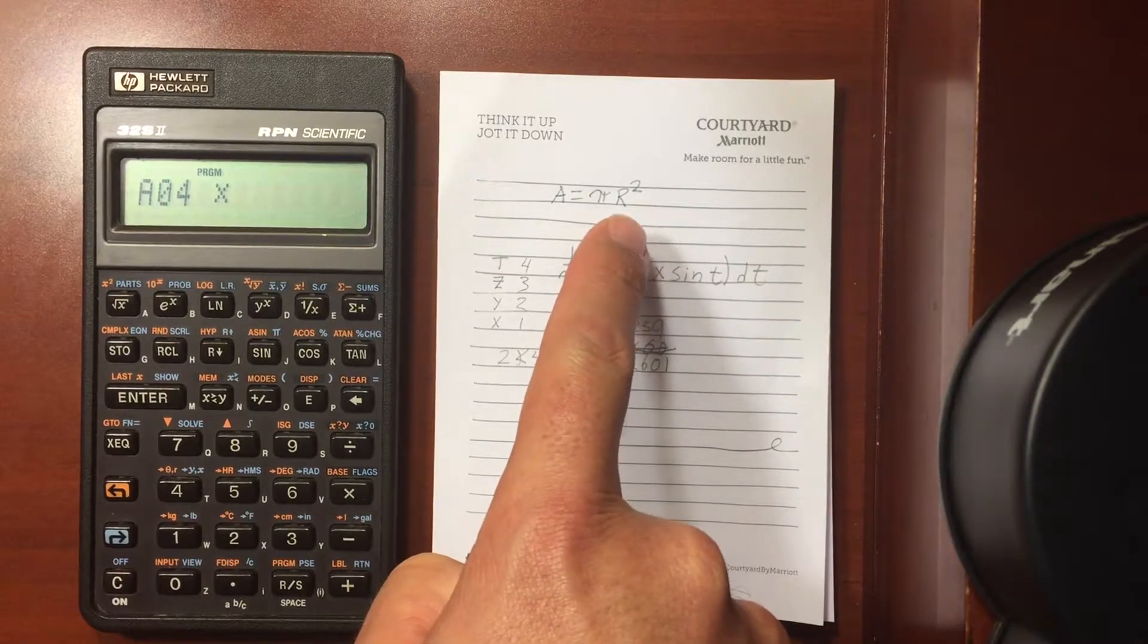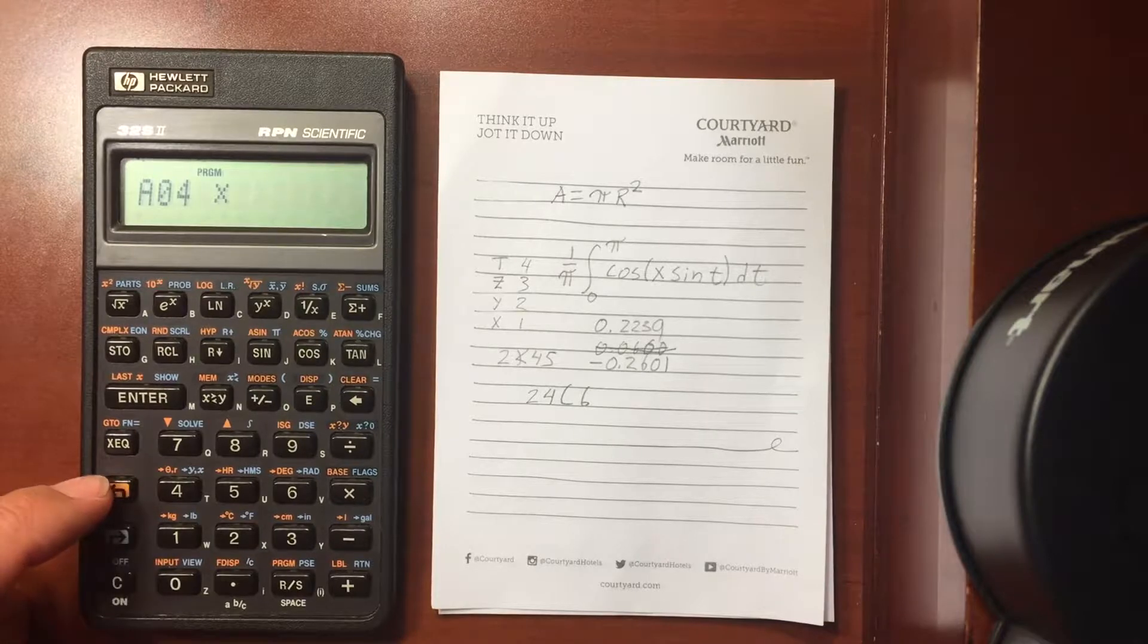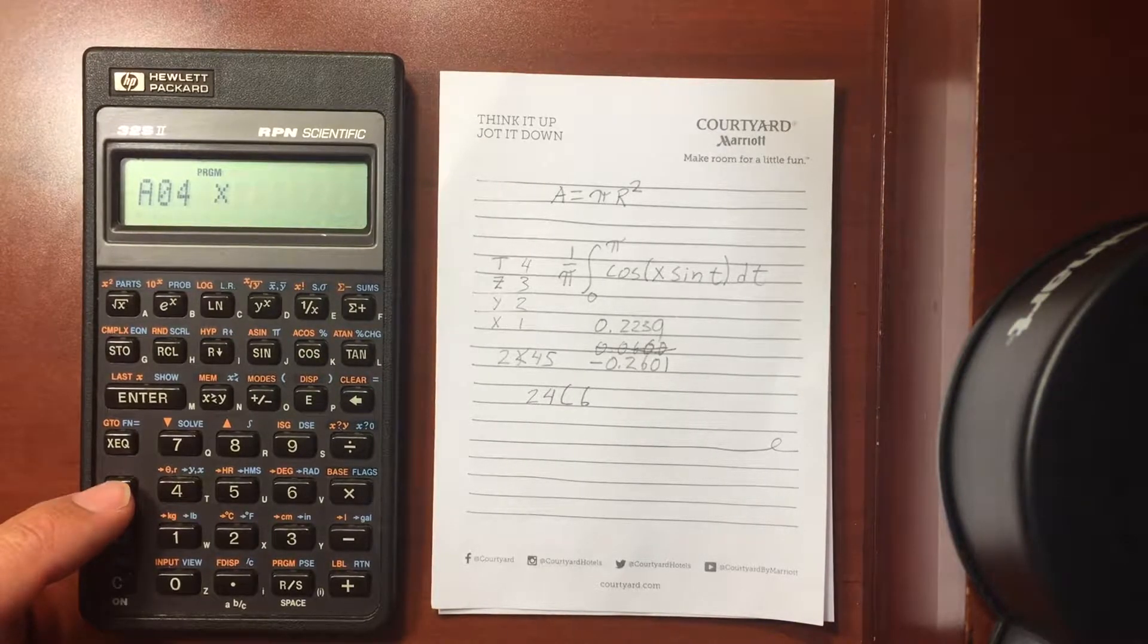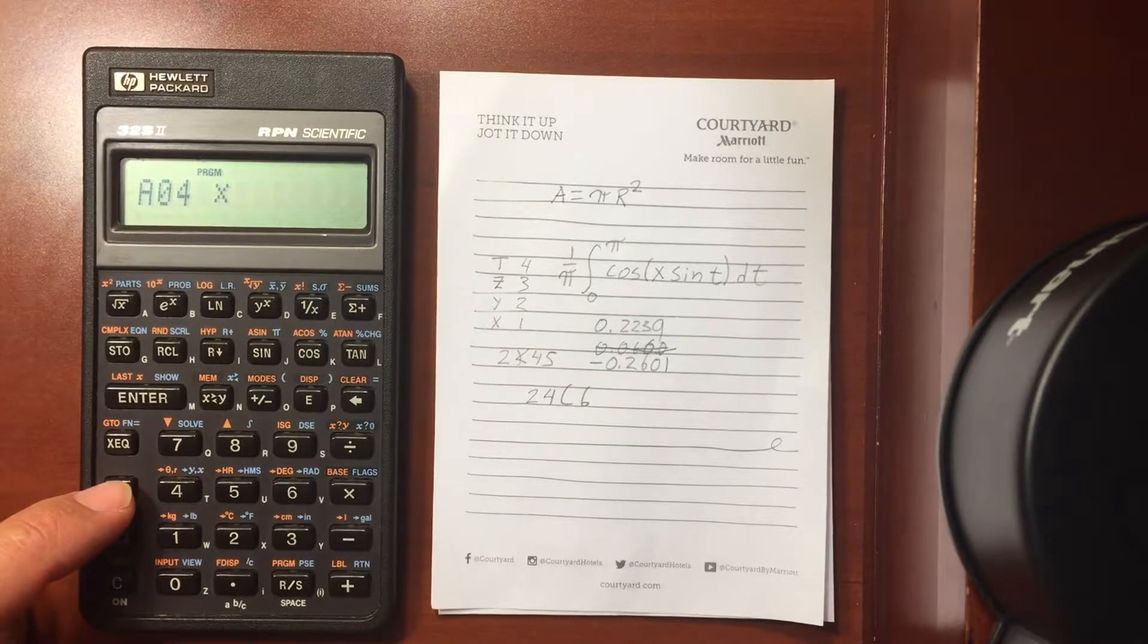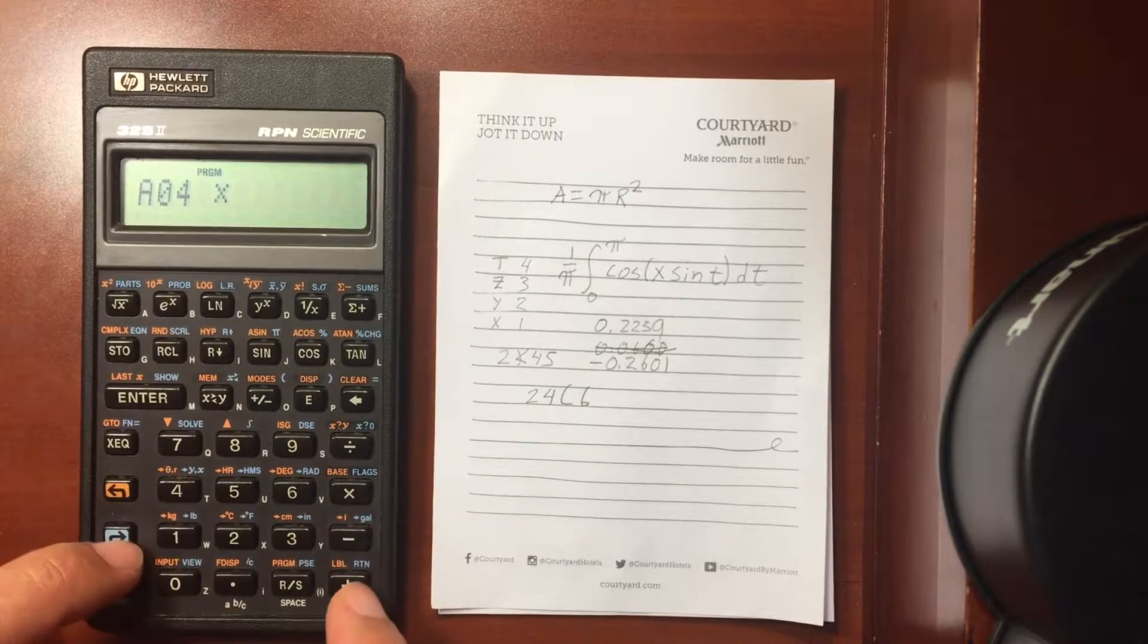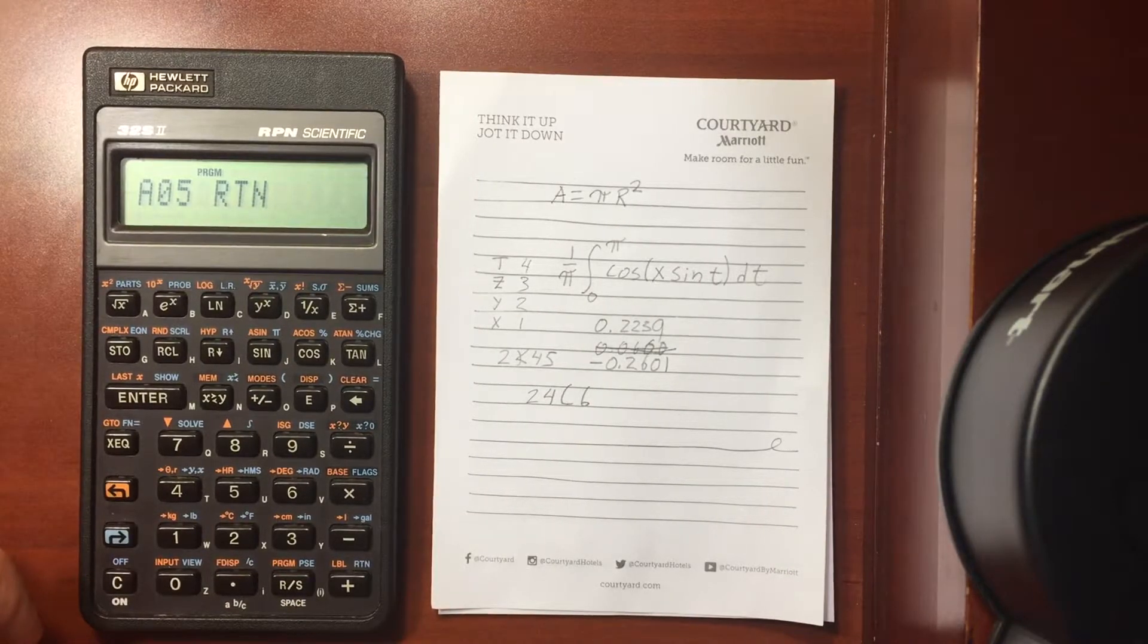So I just did this calculation here but I did it in a program. Then I'm going to hit the return, see where it is, return, right here, next label return. So that brings me back up to the top of the program.